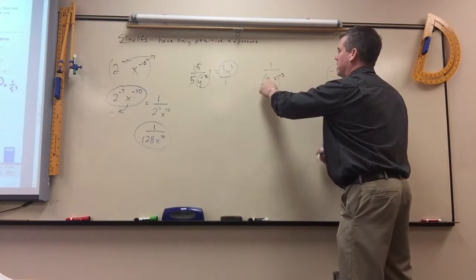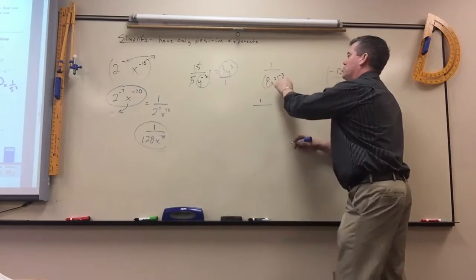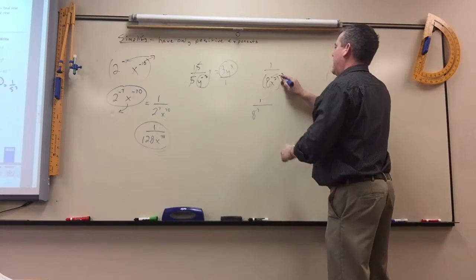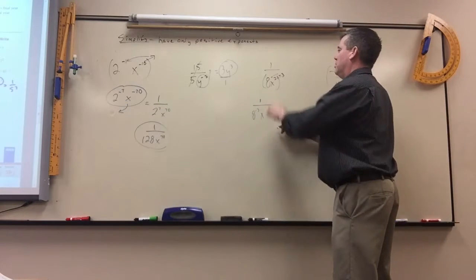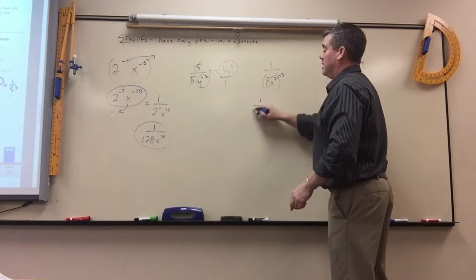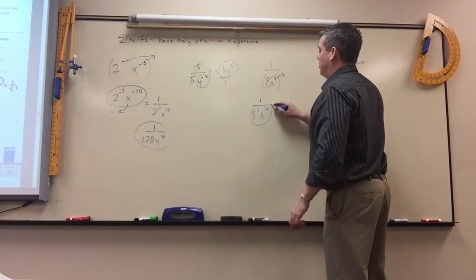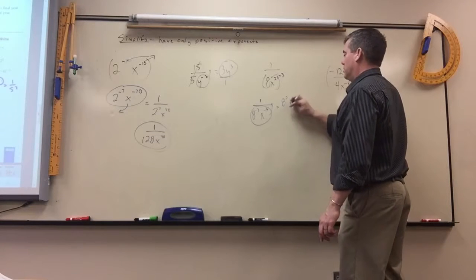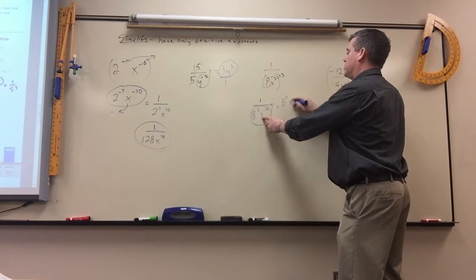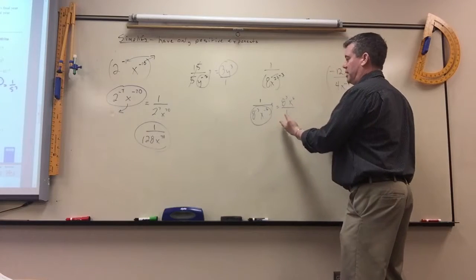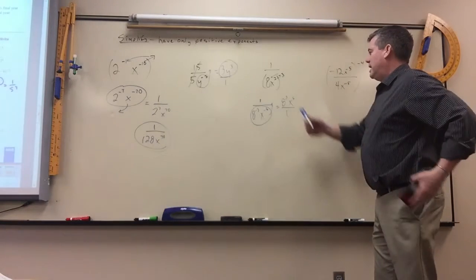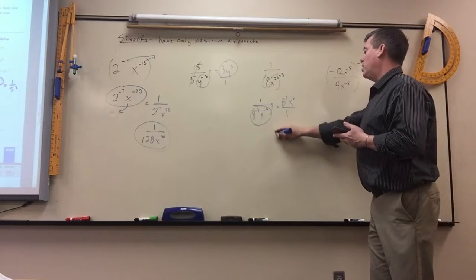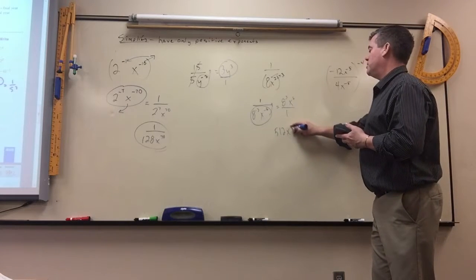Here, everything has to be raised to the negative 3rd. So it's 8 to the negative 3rd, x squared to the negative 3rd. You multiply, so that's negative 6. Both of these have to move up. It would be 8 to the 3rd, x to the 6th on top, with nothing left on the bottom. 8 to the 3rd is 512, so the answer is 512x to the 6th.